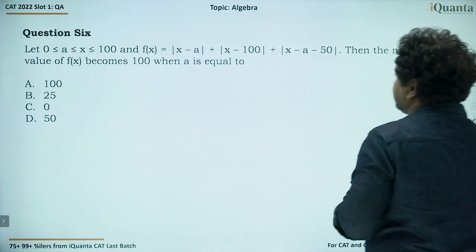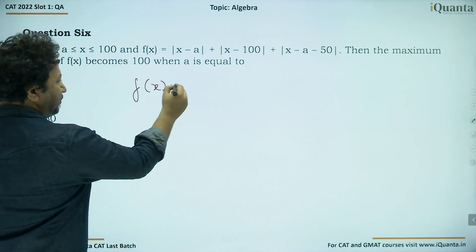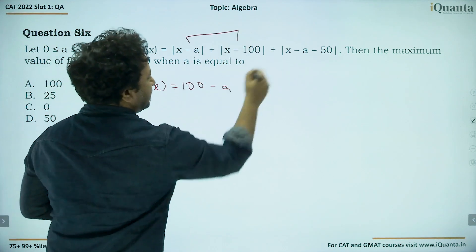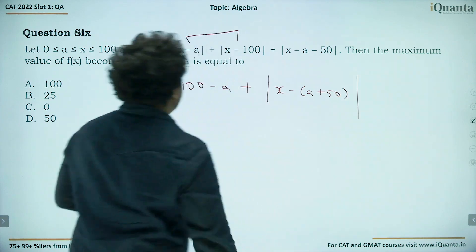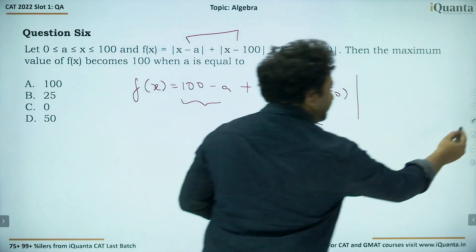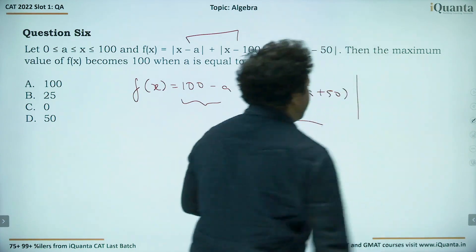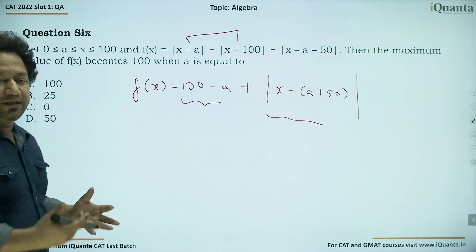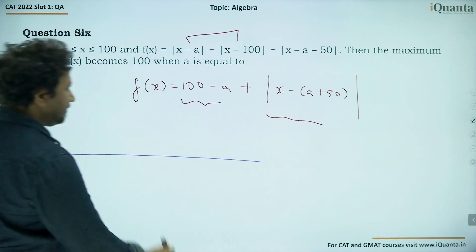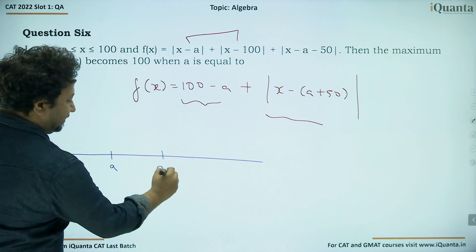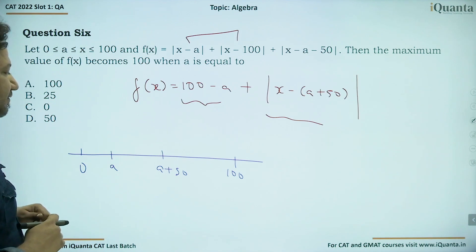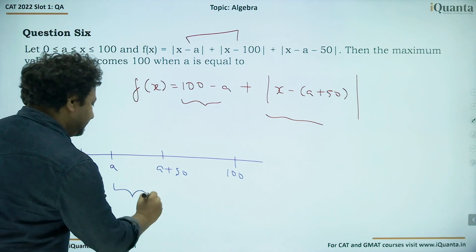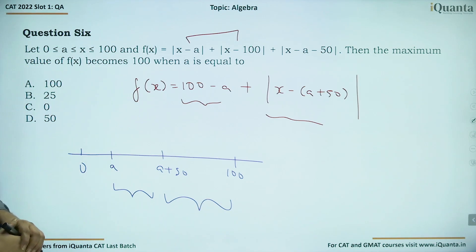We can rewrite f(x) = (100 − a) + |x − (a + 50)|. The first part is fixed; the second part is variable. Now we need to find the maximum possible value of |x − (a + 50)| as x ranges over [a, 100]. Mark a, a + 50, and 100 on the number line. X can lie to the left or right of (a + 50) within [a, 100].